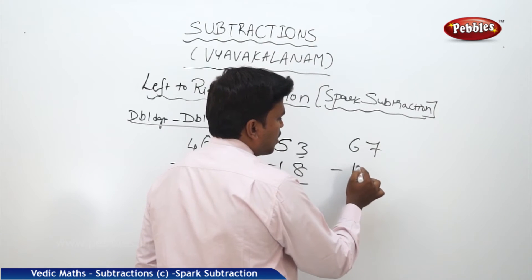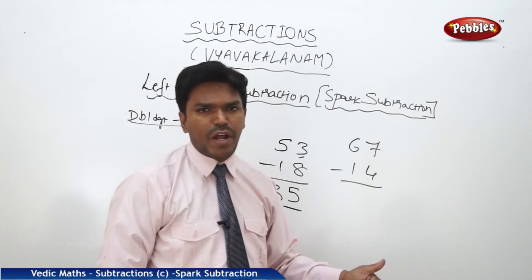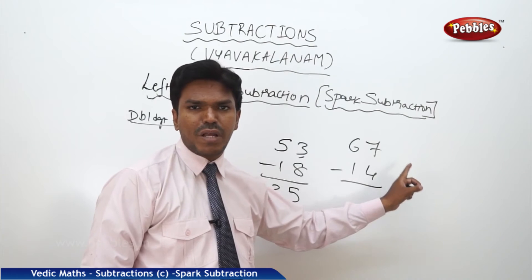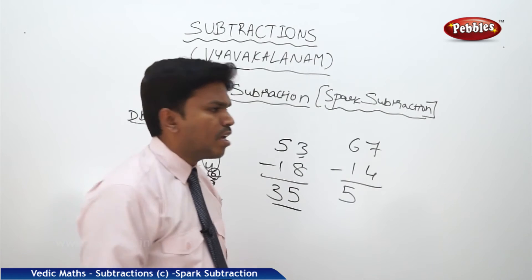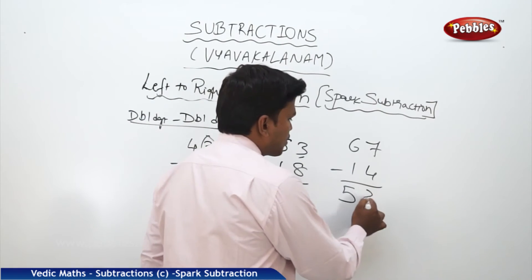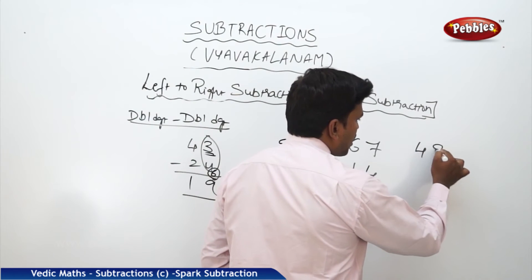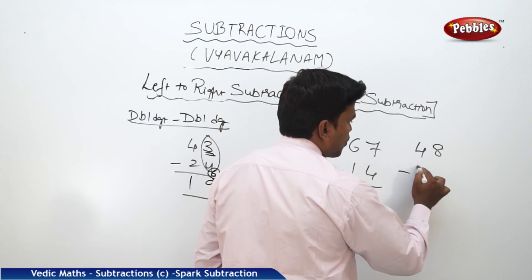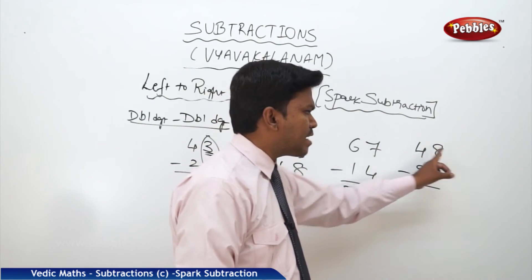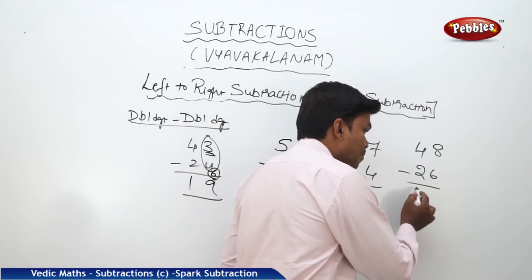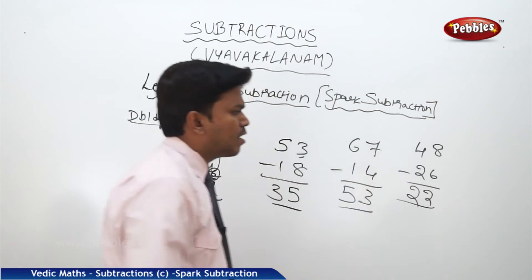67 minus 14: What is 6 minus 1? That is 5. Before dropping 5, check next numbers — they are match. So 5 stays 5. Then 7 minus 4 directly equals 3. Answer is 53. And 48 minus 26: What is 4 minus 2? That is 2. Check next numbers — match. So 2 stays 2. Then 8 minus 6 directly equals 2. Answer is 22.